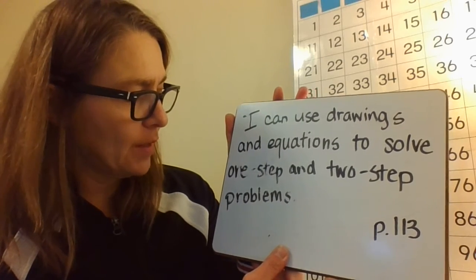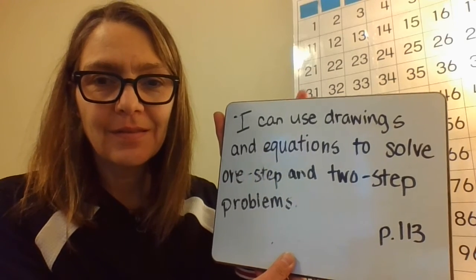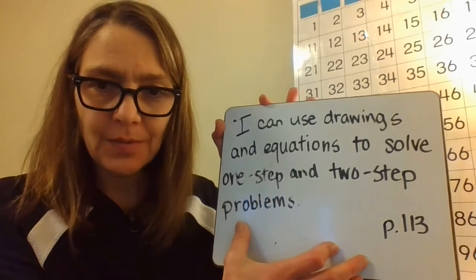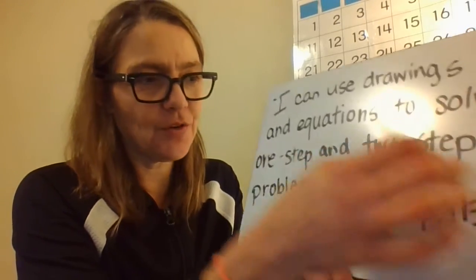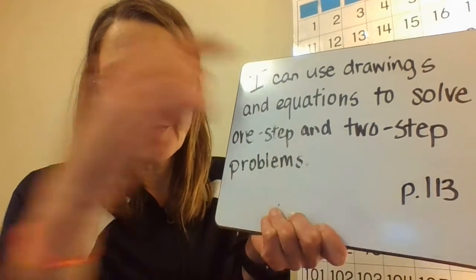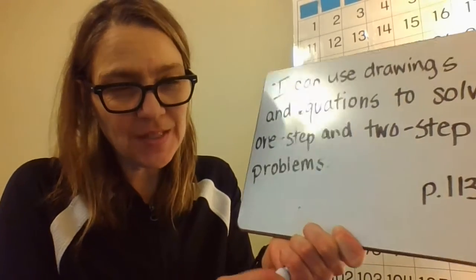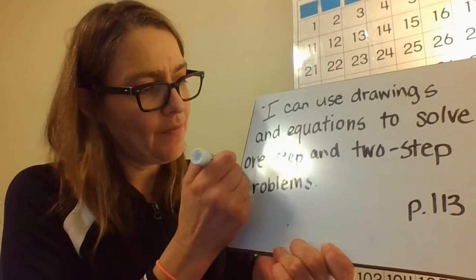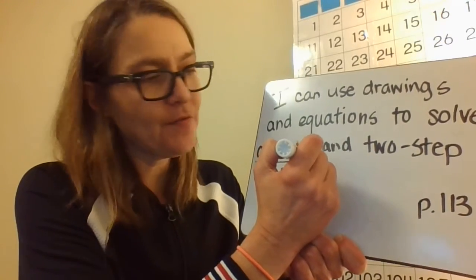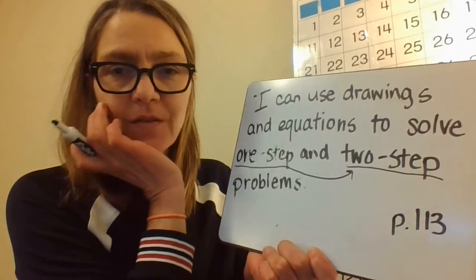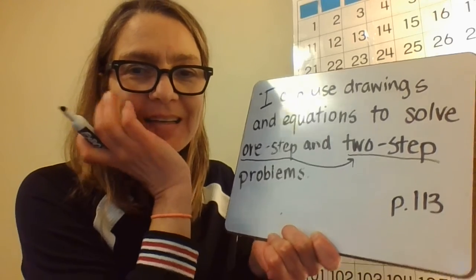I can use drawings and equations to solve one-step and two-step problems. Today we are going to be doing story problems within 100. Story problems are the same as word problems. When we solve two-step problems, there are multiple steps — we solve the first step first and use that answer to solve the second step.